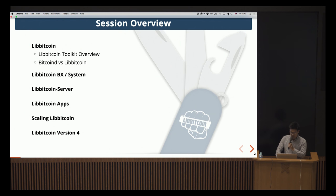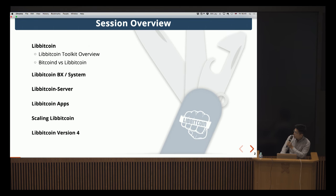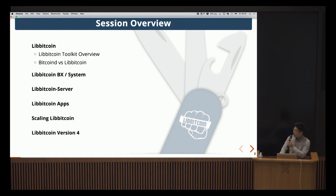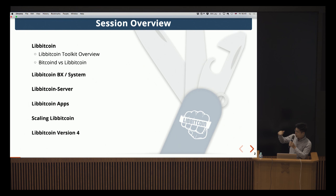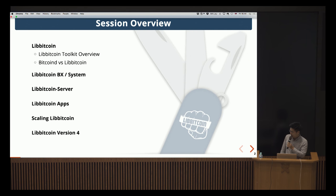I'll give a brief overview of the toolkit overall, and a quick comparison — sometimes it's confusing, like what is Libbitcoin really? Is it a toolkit, a library, a server? It's all of the above. We'll do a quick comparison of the server versus Bitcoin-d. Then we have bx, a command line power tool for scripting with hashing functions and server query tools. There's also the base libbitcoin system library containing the consensus code, the libbitcoin server, and we'll cover a basic first Libbitcoin learning app, scaling, and the upcoming version that Eric and the maintainer team are working on.